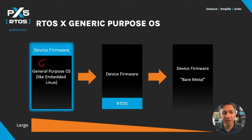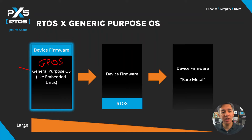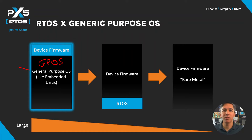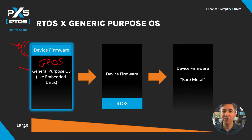A GPOS, or general purpose operating system like embedded Linux, means that we have an operating system taking care of the underlying hardware — processor, memory, network, peripherals, interrupts, timers, and registers — all taken care of by the operating system. Your application or device firmware will be built on top of the operating system and will rely on it to work.